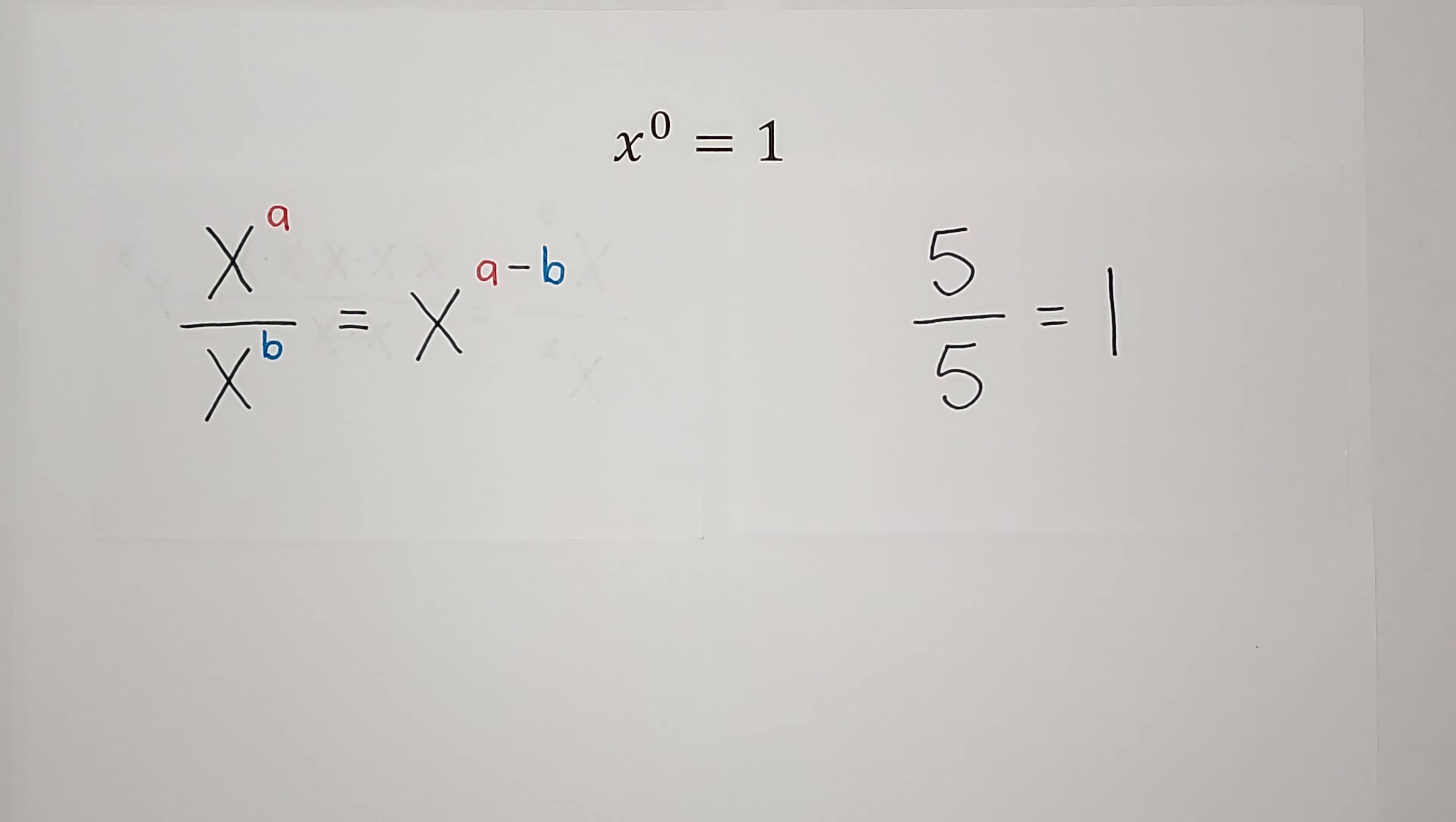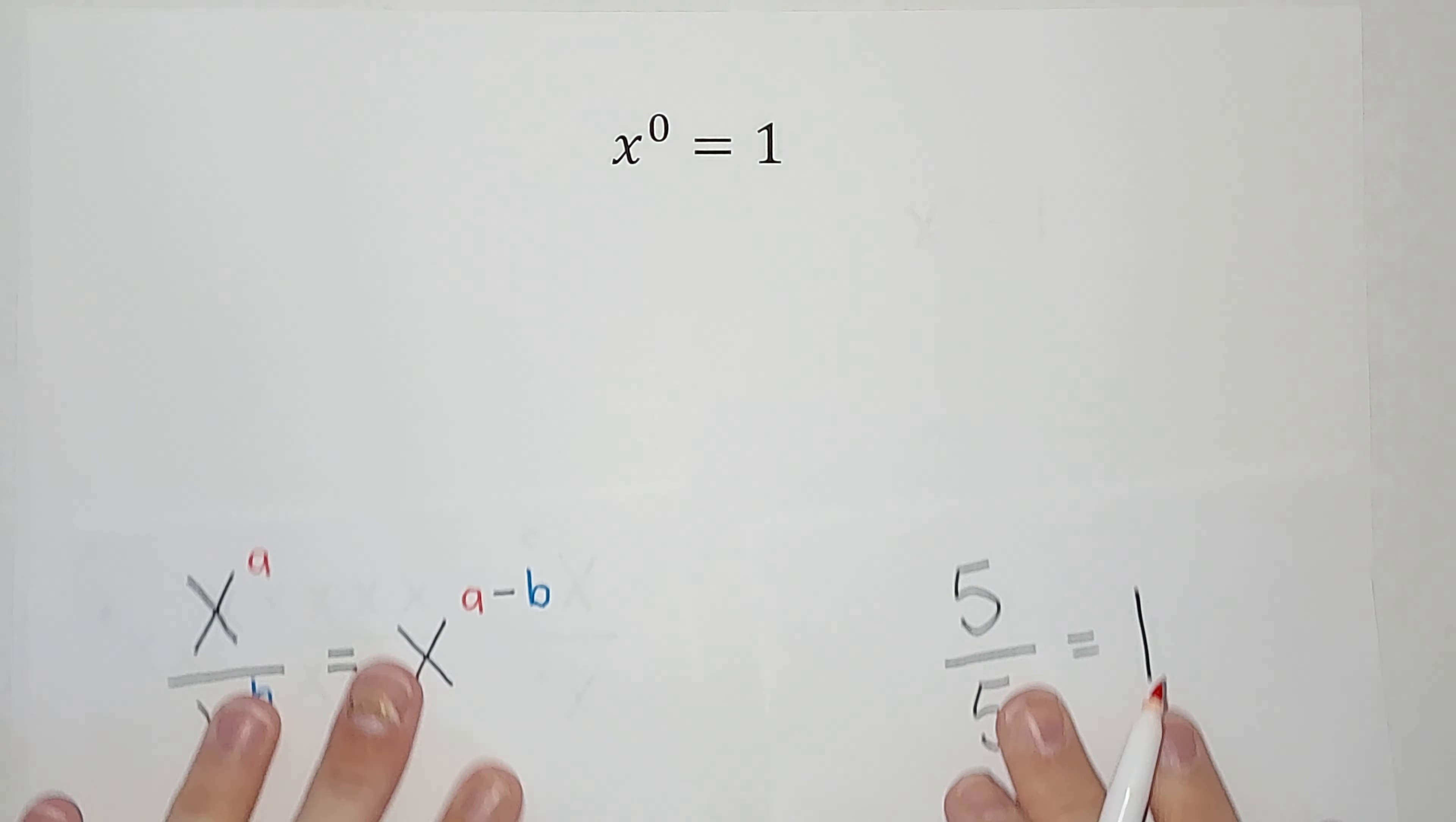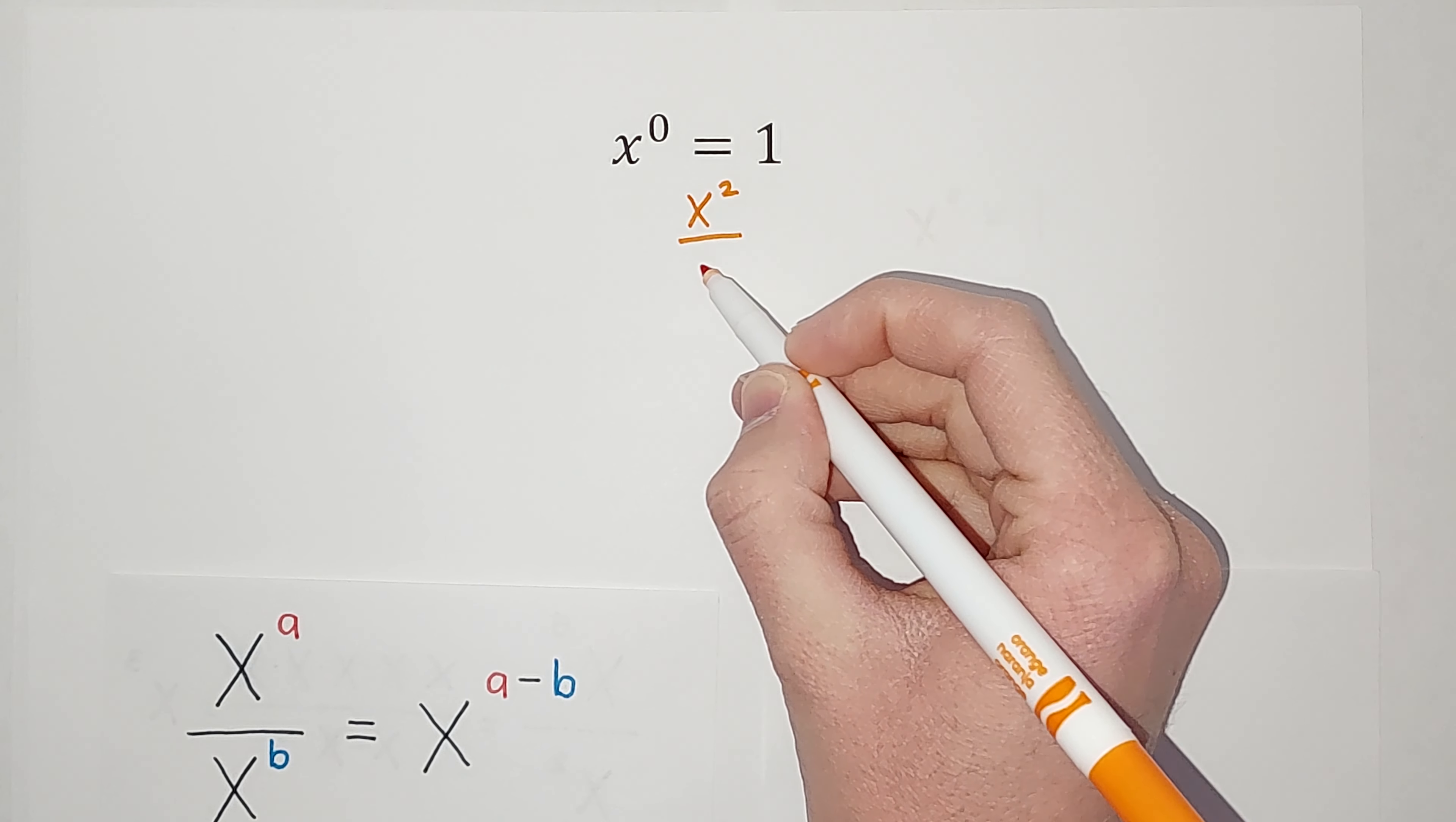These are the two things we need to believe are true in order to say that x or anything to the zero power is one. So first of all, let's look at this. If I have x squared over x squared, there's two ways I can look at this.